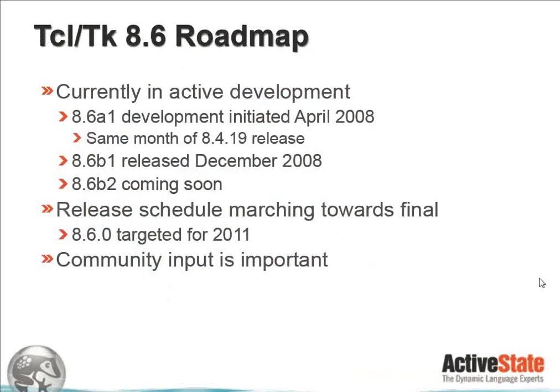So, first off, a little bit about the 8.6 roadmap. It is currently in active development. The first alpha release of 8.6 was done in April 2008, which means it's coming up on three years now. That was done in the same month as the 8.4.19 release, considered almost the final end of the 8.4 release set. In the meantime, 8.5 has become the stable series. 8.6 has gone on to have a Beta 1 release in December 2008, and Beta 2 is still coming soon. The 8.5 release series had a near four-year release timeframe, and we're coming up on the three-year mark for 8.6. We are marching towards final and hope to have an 8.6 final done in 2011. Community input is important, and your questions and advice are always appreciated.